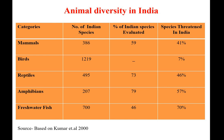From reptiles (class Reptilia of phylum Chordata): 495 species, 73 percent evaluated, and 46 percent threatened in India. From amphibia (class Amphibia): 207 species, 79 percent evaluated, and 57 percent threatened. Regarding freshwater fish: 700 Indian species, 46 percent evaluated, and 70 percent are threatened species.